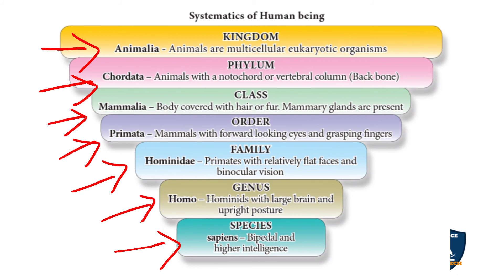Species Sapiens refers to higher intelligence. Humans are bipedal — two legs and two hands — and possess higher intelligence. We can speak, read, write, invent, and discover, making us a six-sense being. Animals have five senses, but humans are special due to the ability to speak and reason.